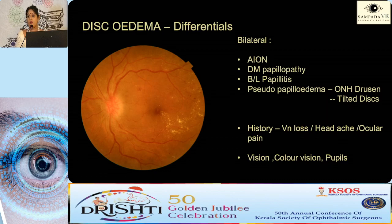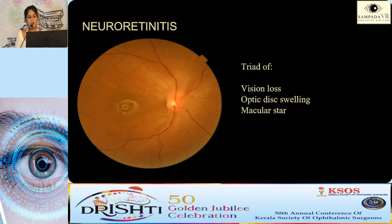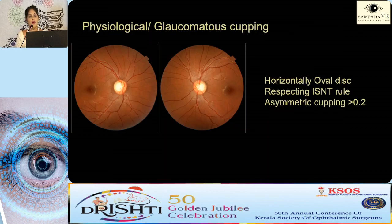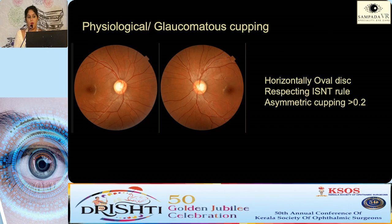Bilateral papillitis is not uncommon, and pseudopapilledema can also be seen. These can be differentiated with history, visual loss, associated symptoms, and signs like color vision and pupils. Neuroretinitis presents with the triad of optic disc swelling, visual loss, and macular star. Retrobulbar neuritis: the patient sees nothing and the doctor sees nothing — you can go for a VEP. Physiological cupping is a horizontally oval disc respecting the ISNT rule; asymmetric cupping greater than 0.2 should raise suspicion of glaucoma.